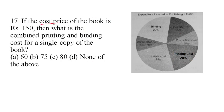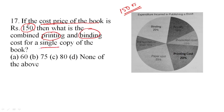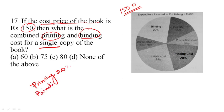If the cost price of the book is 150 rupees, what is the combined printing and binding cost? Printing and binding percentage combined: if you add the total, it is 45 percent.